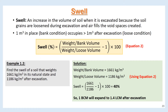The formula for swell is: weight per bank volume divided by weight per loose volume, minus one, multiplied by 100. Example 1.2: Find the swell of a soil that weighs 1,661 kg/m³ in its natural state and 1,186 kg/m³ after excavation. Using equation 2: 1,661 divided by 1,186, minus 1, multiplied by 100, equals 40%. So 1 BCM will expand to 1.4 LCM after excavation, an increase of 40%.